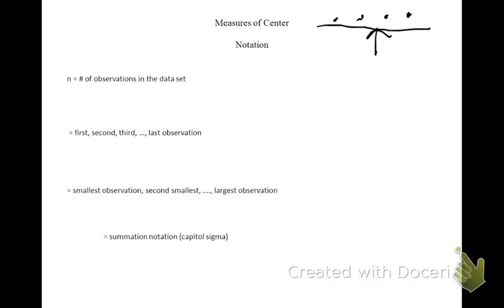To define the measure of center, we're going to need to go through some notation first. We'll let n be the number of observations in a data set. For this data set, there are 1, 2, 3, 4 observations, so n would equal 4.